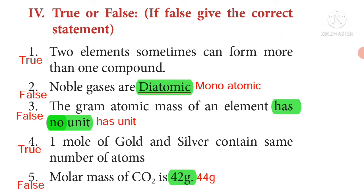Noble gases are monoatomic. The gram atomic mass of an element has no unit. The given statement is false because the gram atomic mass of an element has unit. One mole of gold and silver contain same number of atoms. True. Molar mass of carbon dioxide is 42 gram. Here the given statement is false and the correct statement is molar mass of carbon dioxide is 44 gram.